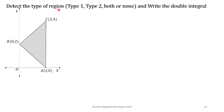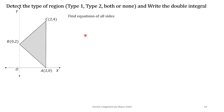Let us see a question regarding the same. The question says: detect the type of region — Type 1, Type 2, both, or none — and write the double integral for the same. First of all, observe the region given to us: it is a closed region, a triangle with vertices A(2,0), B(0,2), and C(2,4).